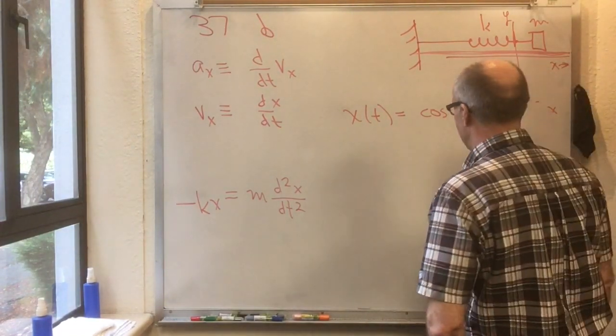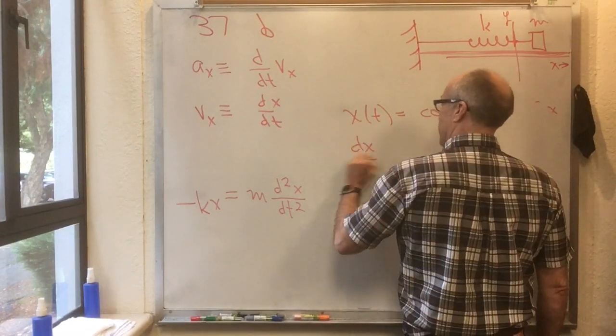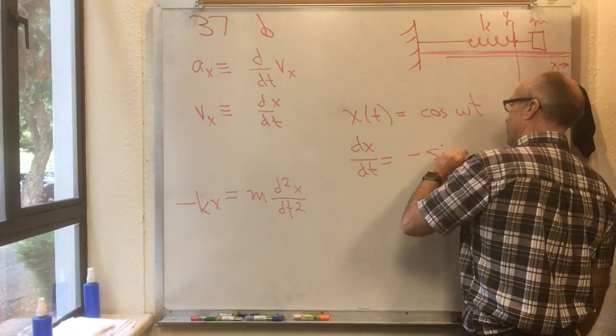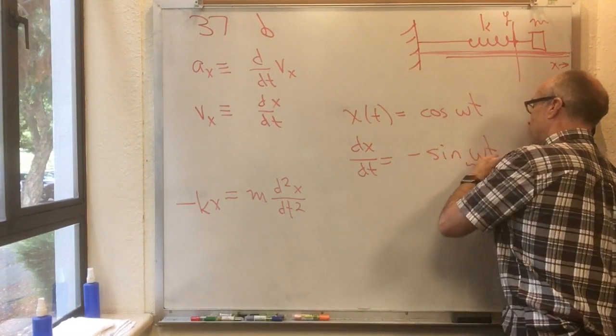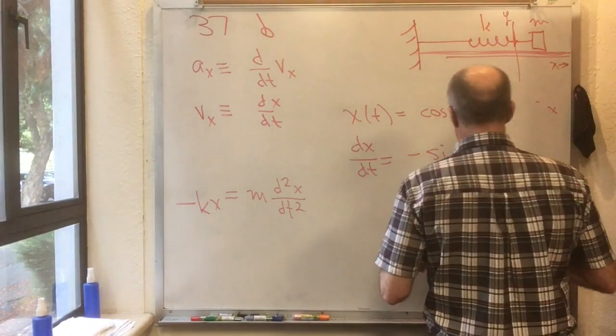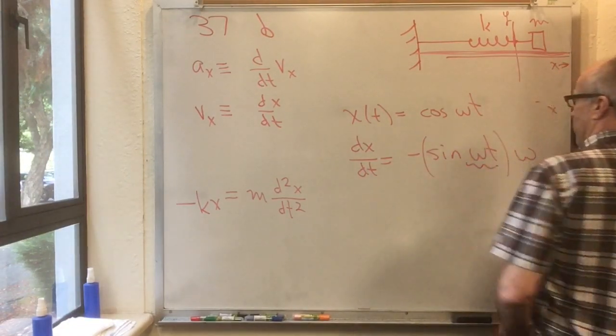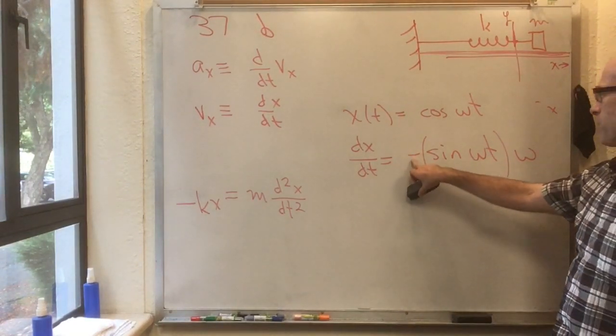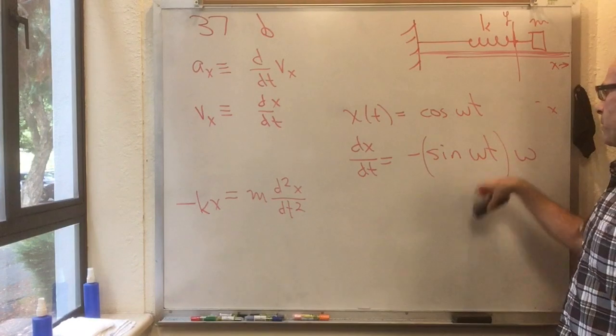Well, that's my guess. I got to take d by dt of it. See what I get. dx dt in that case. Derivative of cos is minus sine. And I got to take the derivative of the inside there. Derivative of omega t with respect to t. That just gives me an omega. So dx dt is minus omega sine omega t.